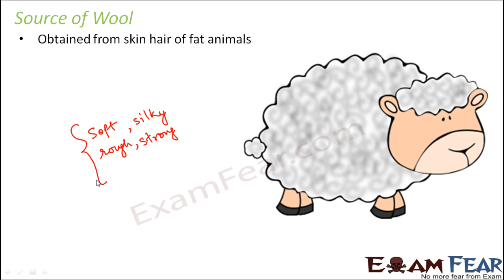Different animals produce different types of wool. Wool is normally compressed into small folds so that it helps to spin the fibers, allowing the wool fibers to stay together. That wool can then be woven together to form a sweater, jacket, or any other garment. This is how we obtain wool from the skin of hairy animals.